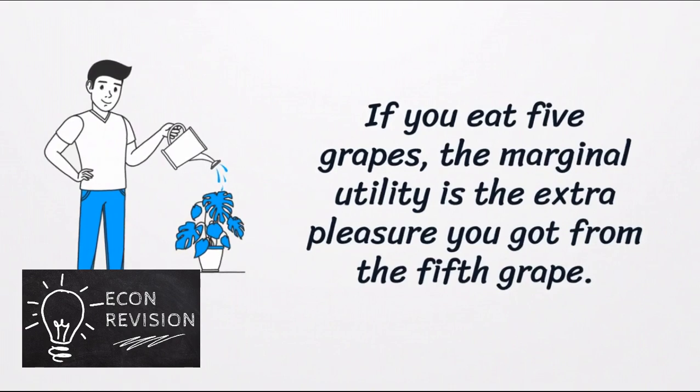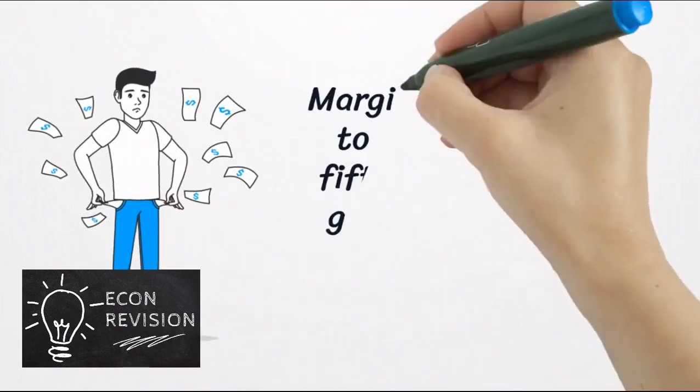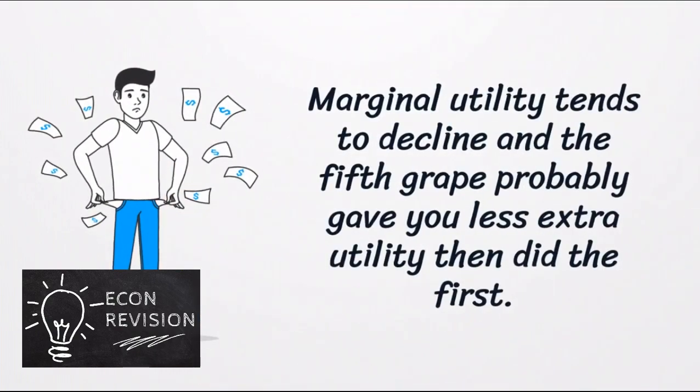But you know, sometimes the marginal utility can be declined, and the fifth grape can give less extra utility than the first grape you've consumed.